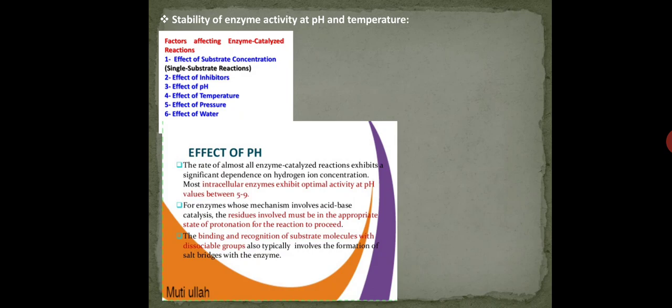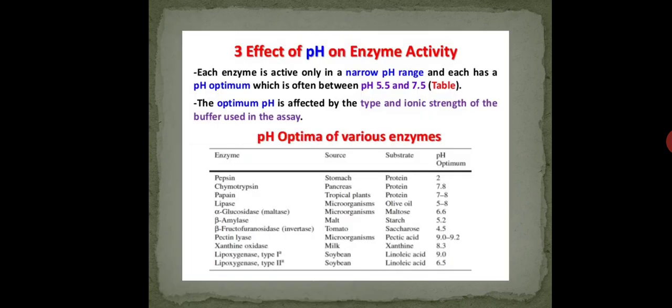Now, for the enzyme whose mechanism involves acid-base catalysis, residues must involve the appropriate state of protonation for the reaction to proceed. This depends on the enzyme's necessity about the pH. We adjust the pH range, then it may be acidic or it may be basic. Plus, the binding of substrate molecule with the dissociate groups typically involves the formation of salt bridges with the enzyme. So if the substrate molecule is attached to the enzyme, it may create the disturbance in the pH. So it is necessary to maintain or regulate the pH before substrate addition and after substrate addition.